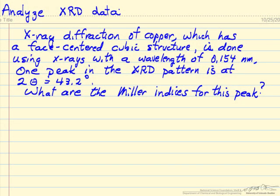In this example we'll analyze x-ray diffraction of copper, which has a face-centered cubic structure. We'll carry out this analysis with x-rays that have a wavelength of 0.154 nm. In the XRD pattern we see a peak at an angle 2θ of 43.2 degrees. The question is, can we determine what the Miller indices are for that peak?